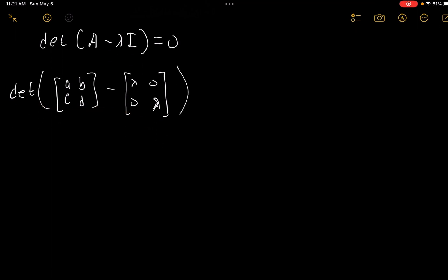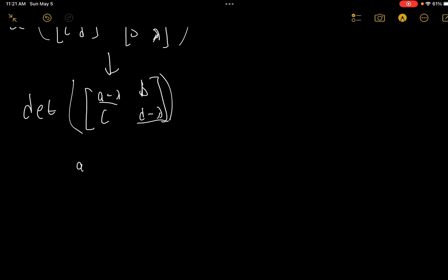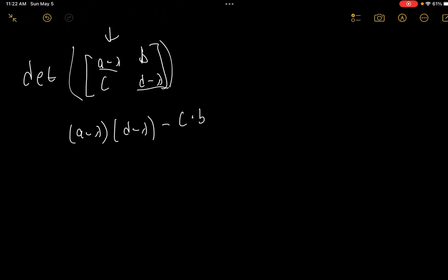So we would get this would simplify down to a matrix of A minus lambda, B, C, and then D minus lambda. And we would want the determinant of this, so we would take this value times this value, so it would be A minus lambda times D minus lambda, and then we subtract that by C times B. And so now if we expand this out or multiply this out, we would get A times D, and then minus lambda A minus lambda D plus lambda squared, minus CB.